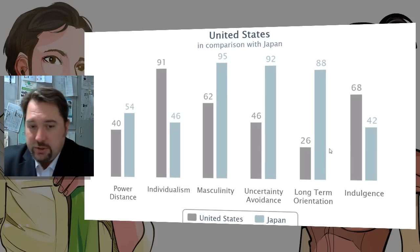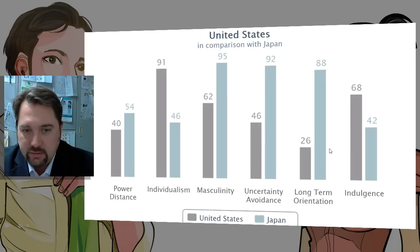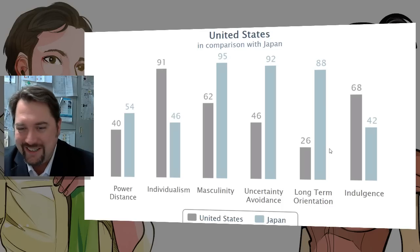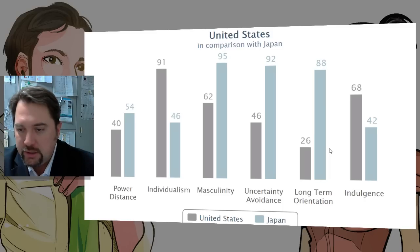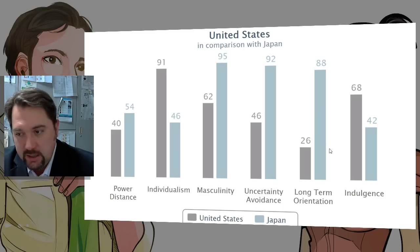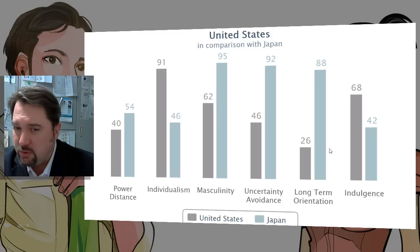To compare these once again: power distance — United States a little bit lower; individualism — United States number one in the world; masculinity — Japan number one in the world; uncertainty avoidance — big gap between the two cultures; short-term versus long-term orientation — huge gap between these two societies; and indulgence versus restraint — also a difference, though not as large.